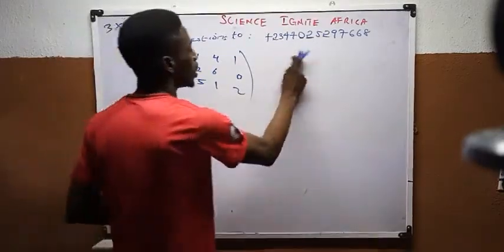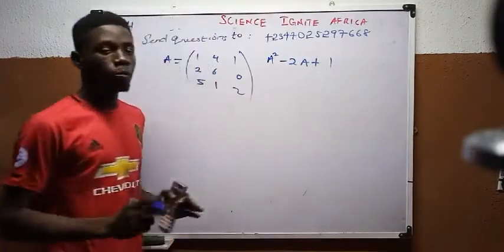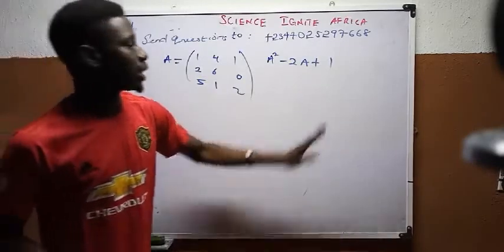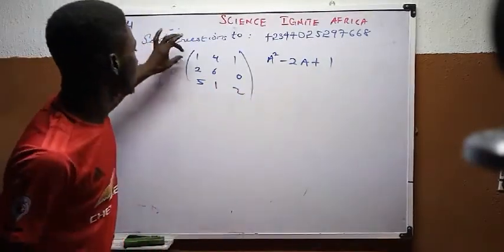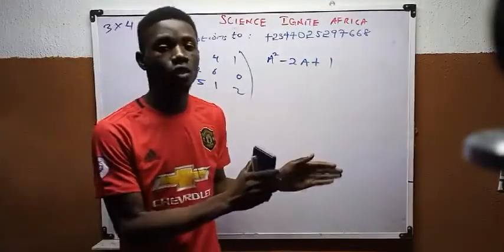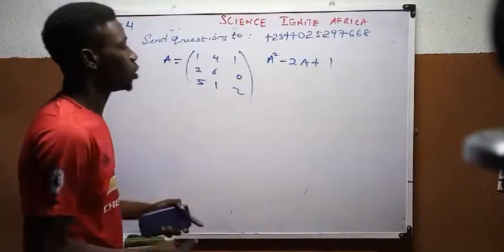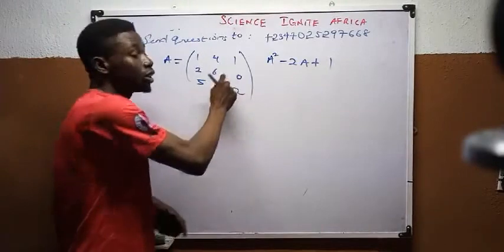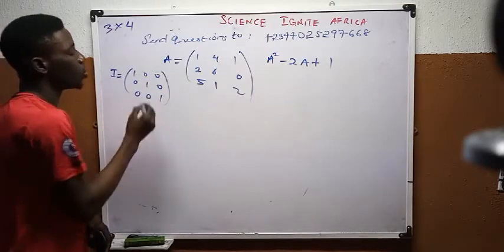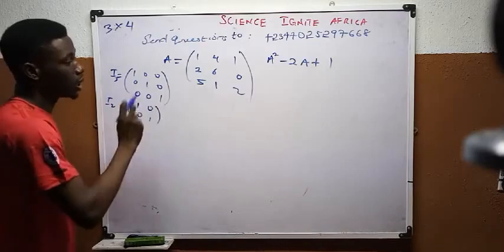Sometimes questions ask you to compute something like A squared plus 1. I told you last time that when the number 1 appears alongside matrices — not as an entry inside the matrix, but as something to be added to other matrices — that 1 is not ordinary. It is known as the identity matrix. For a 3×3 matrix, the identity matrix is: 1, 0, 0 / 0, 1, 0 / 0, 0, 1. For a 2×2 identity matrix, it is: 1, 0 / 0, 1.